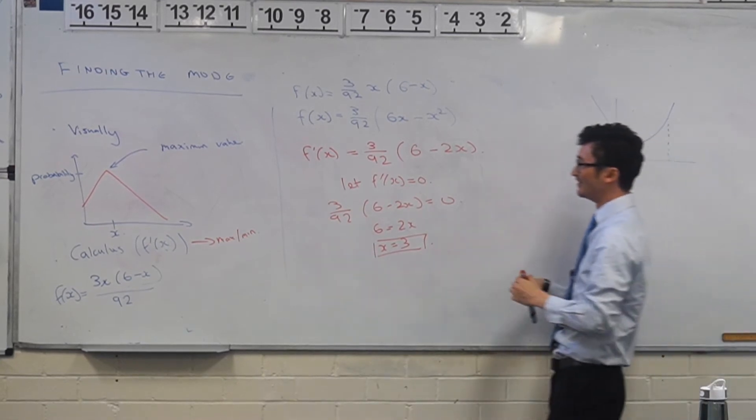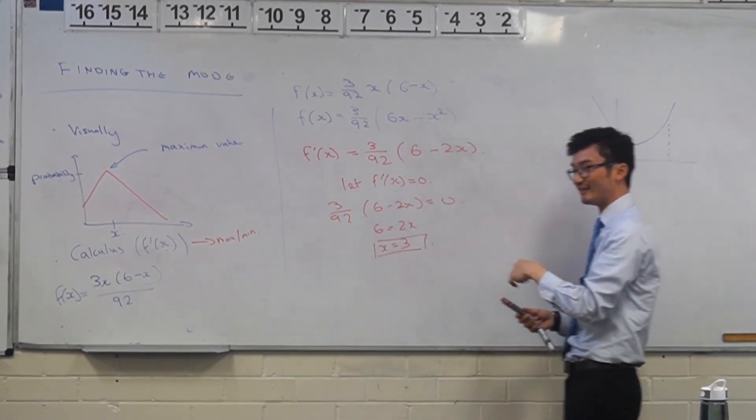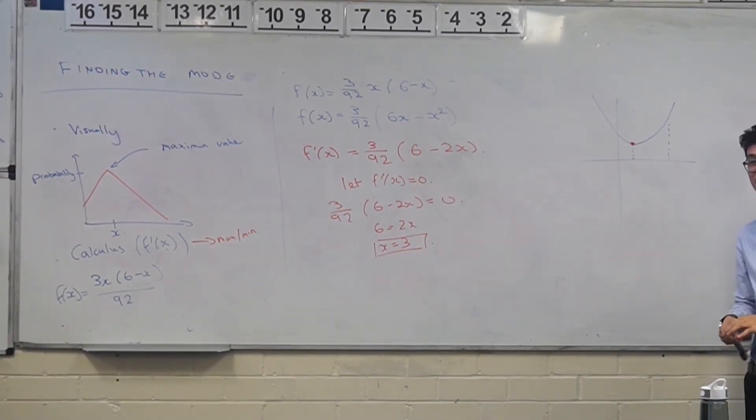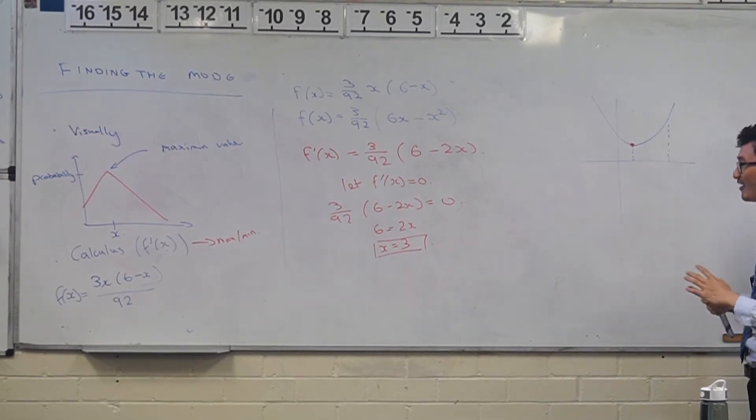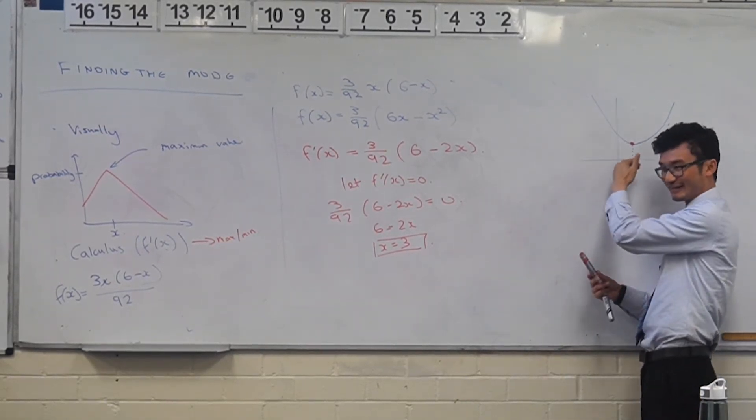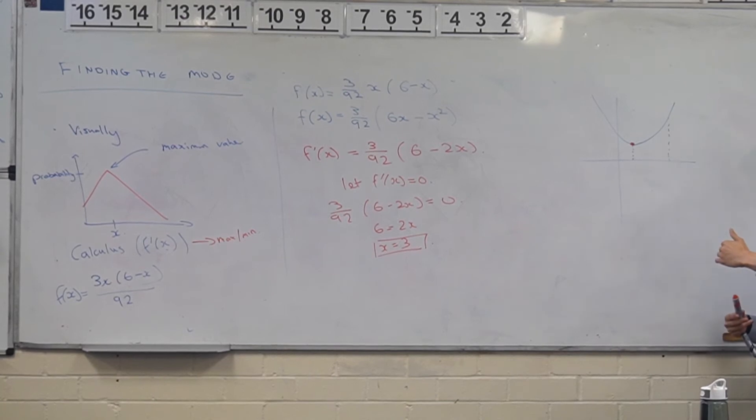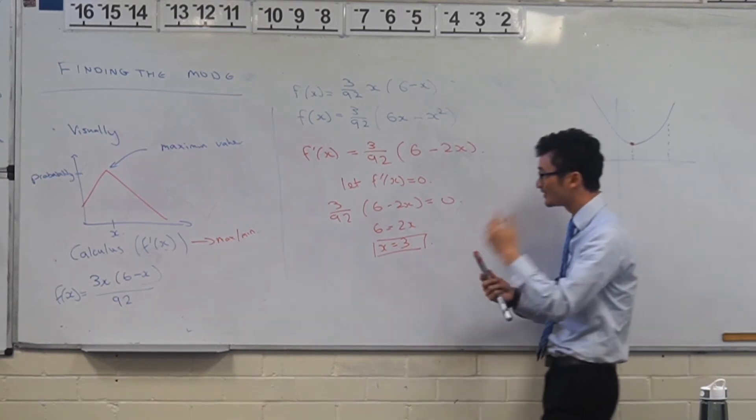No, right? So can you see the problem? If you don't really think about it and don't classify, you may be potentially finding a minimum point. And then you're giving the value that occurs the least - that's the least probability. Can you see the problem with that? So make sure you classify.